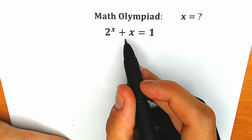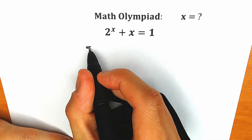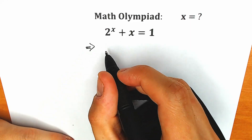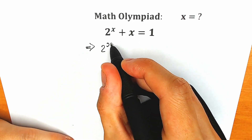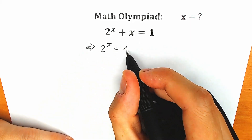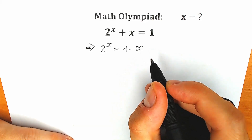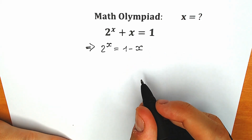First of all, let's subtract x from both sides. As a result, on the left side we will have 2 to the power x, and on the right side we get 1 minus x.